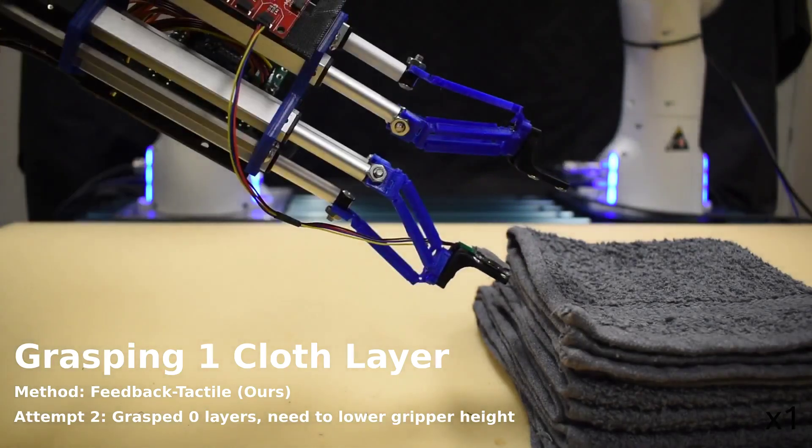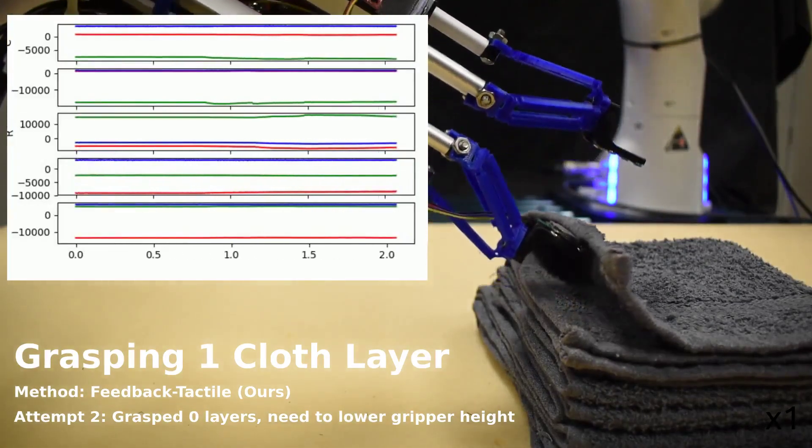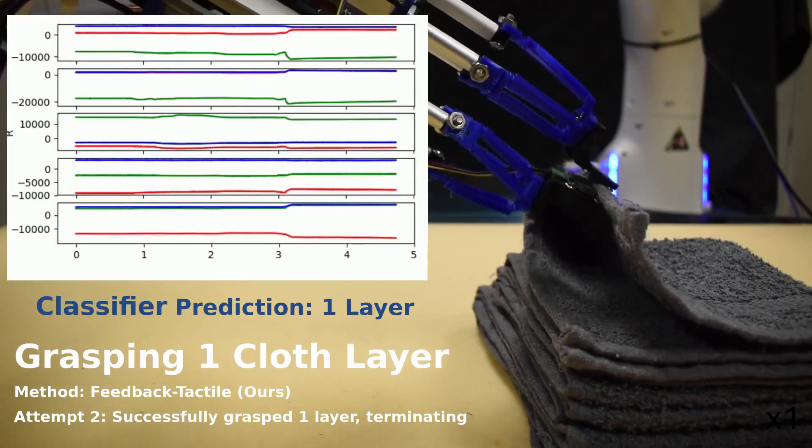Our approach uses the prediction as feedback to adjust the grasp height for the next attempt. The classifier correctly predicts that one layer is pinched and the grasp is successful.